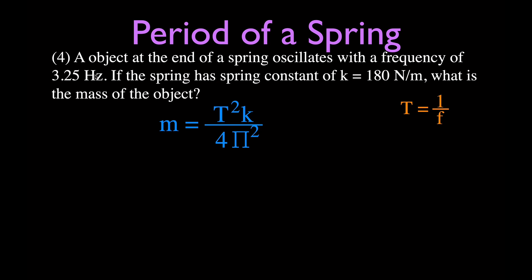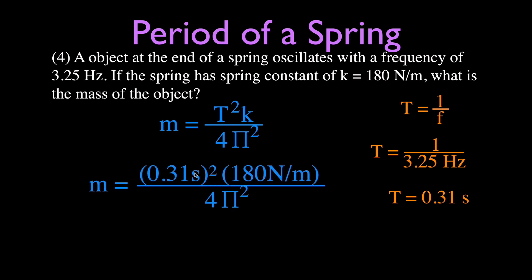We're given frequency, not period, so we calculate the period first: T equals 1 over f, which is 1 over 3.25 hertz, giving T equals 0.31 seconds. Plugging into our equation: T squared times k (which is 180 newton-meters) divided by 4π², we get that the mass is 0.44 kilograms, or equivalently 440 grams.